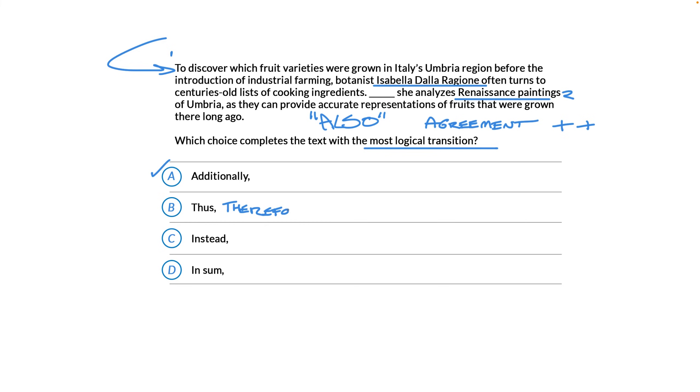It's not like she's looking at paintings as a logical result of looking at ingredient lists, so we can cross that out. Choice C is instead, which is a disagreement transition. And, choice D is in sum, which is sort of like saying in summary. So, that's no good. Choice A is our best option here.